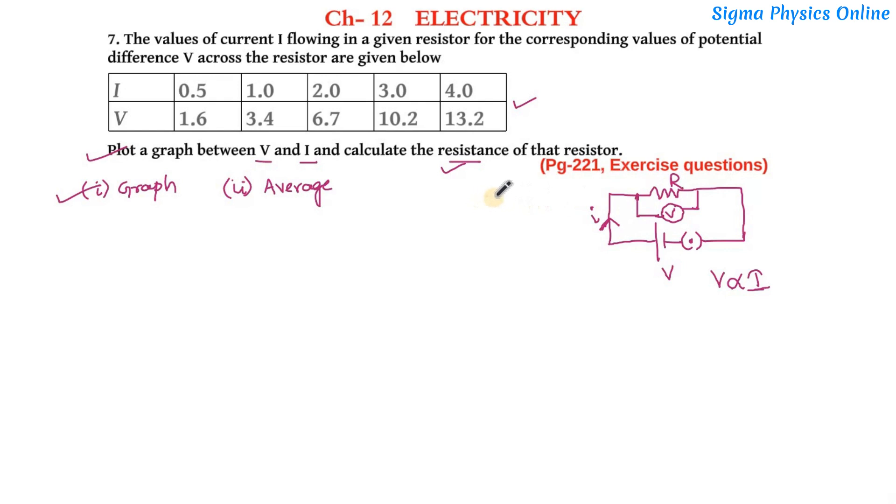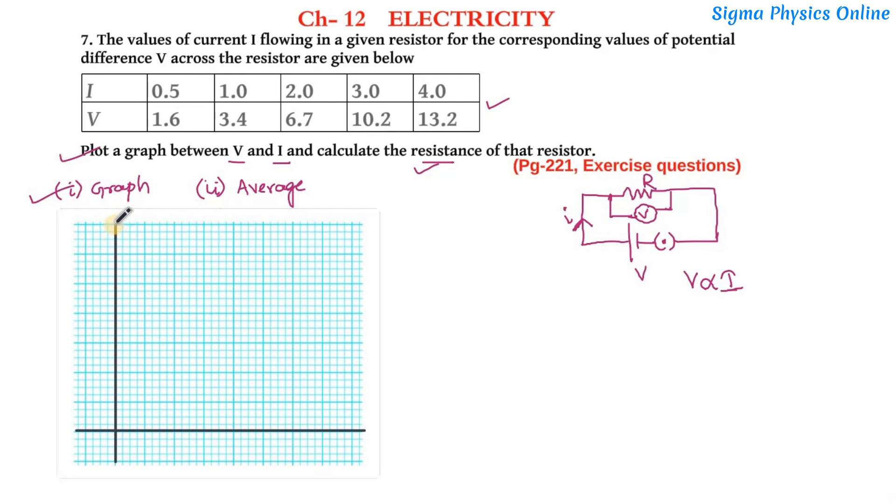So let's plot the graph first. Here I have taken a graph in which this is the y-axis. Let me represent voltage along the y-axis and this is the x-axis. Let me represent current along the x-axis, so this is I and this is V.